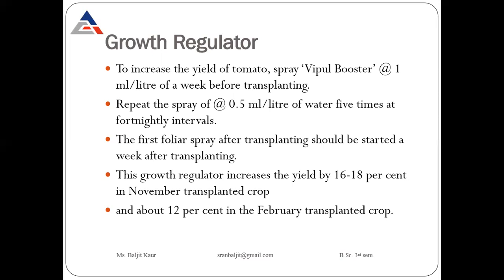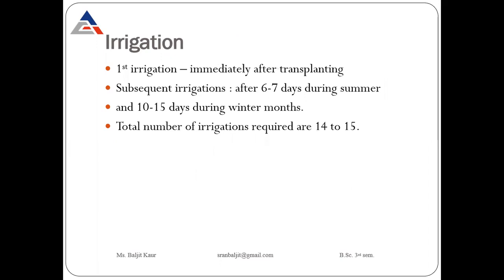For the November-transplanted crop there will be an increase in yield of 16 to 18 percent with Ripple Booster, and if the crop is transplanted during February, there will be an increase in yield of 12 percent. So Ripple Booster can be sprayed to increase the yield of tomato.